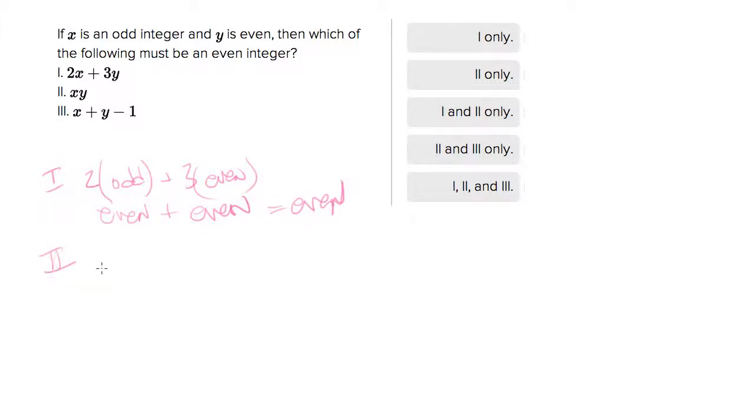Option two is even times odd. Remember, an even times anything is always even, so that will be even. And number three is x, which is odd, plus...